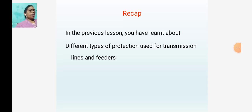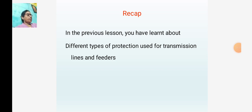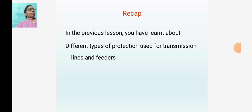In an electrical power system, the transmission lines and feeders are important elements which need to be protected against the various faults that occur on them. The schemes employed for protection of transformers, alternators, and bus bars can also be used for protection of transmission lines and feeders with slight modification. The modifications are required to cope with the protection problems arising out of the greater length of lines.